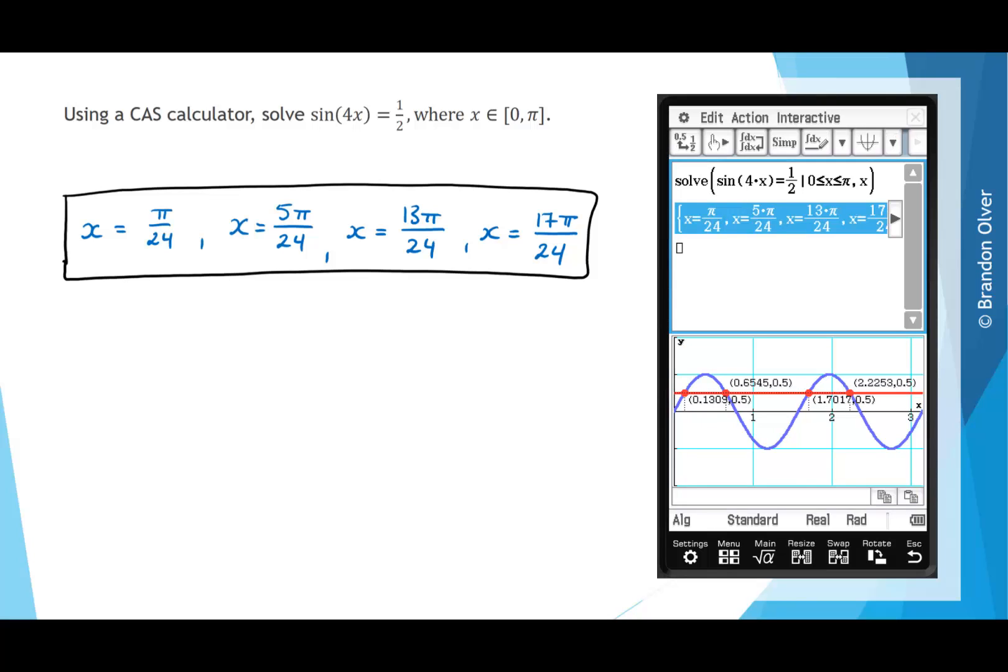If we quickly go back up into the main menu, if we just change these from exact to decimal, we can see that the same values of 0.13, 0.65, 1.70, and 2.23 are all the same as the decimal solutions we found in the graph screen.